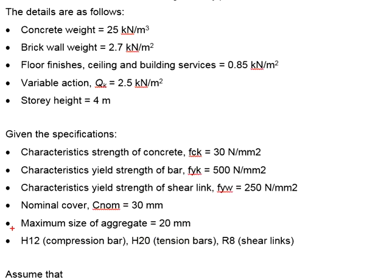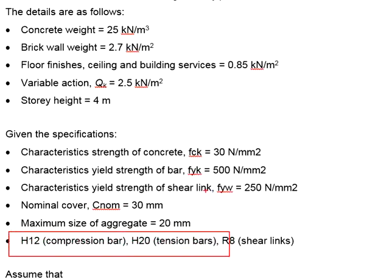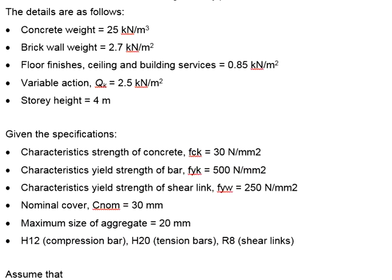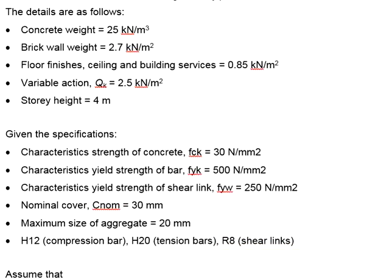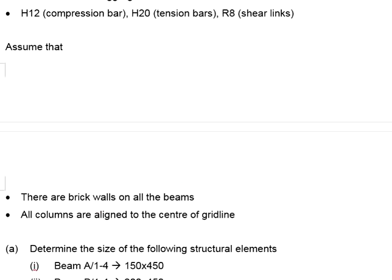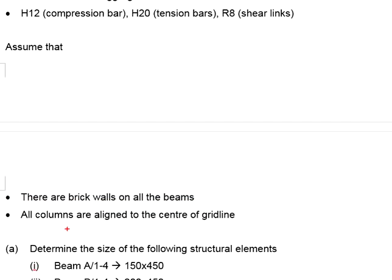The intended reinforcement bars: the compression bar is intended to be H20, and the tension bar is also H20. The H bars refer to Fyk of 500 N/mm². For the shear link, mild steel bar R8 is used, with a characteristic strength of 250 N/mm². Assume that there are brick walls on all the beams, and the columns are aligned at the center of the grid line.